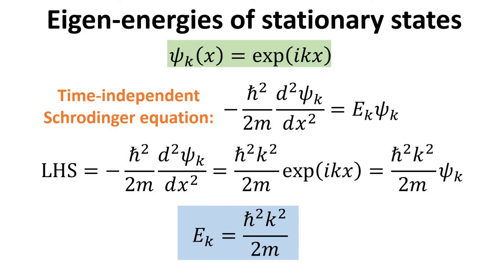Starting from the left-hand side of the equation, we substitute the expression for the wave function. With some simple math, we arrive at a prefactor multiplied with the wave function, where the prefactor is in fact our eigenenergy, given by h-bar squared times k squared divided by 2m.